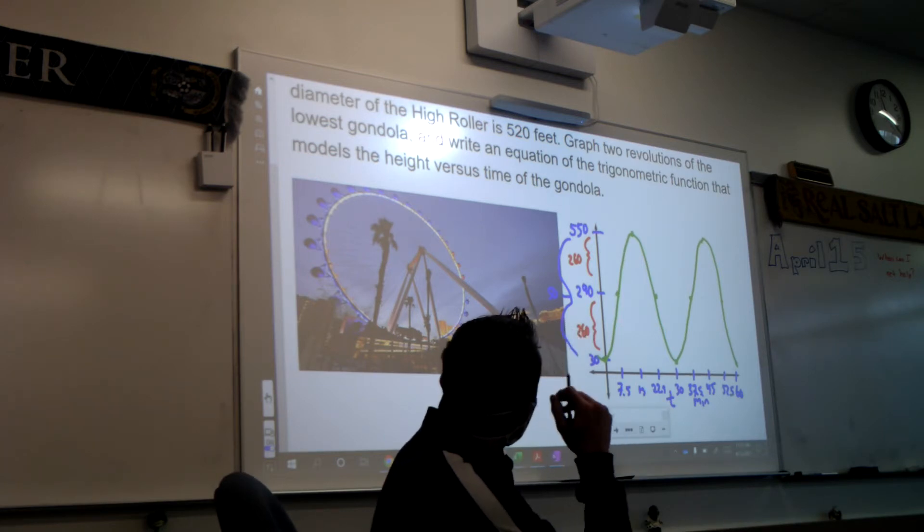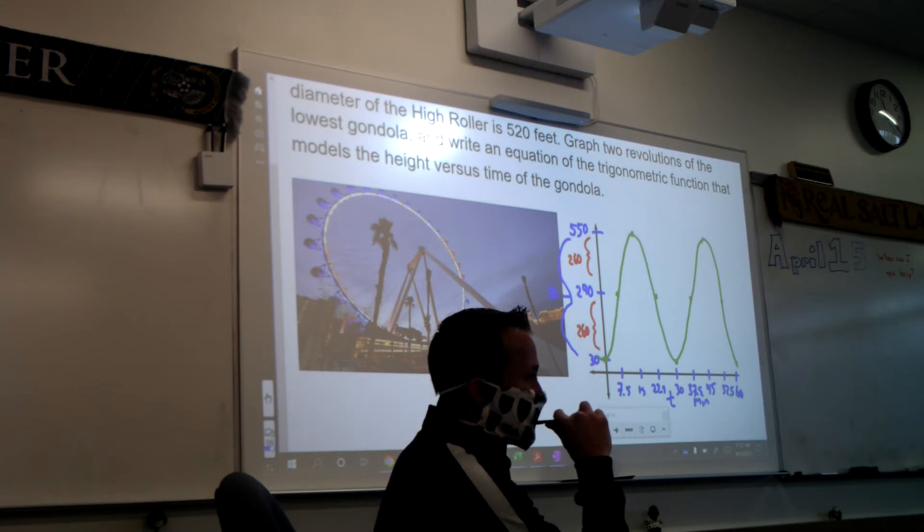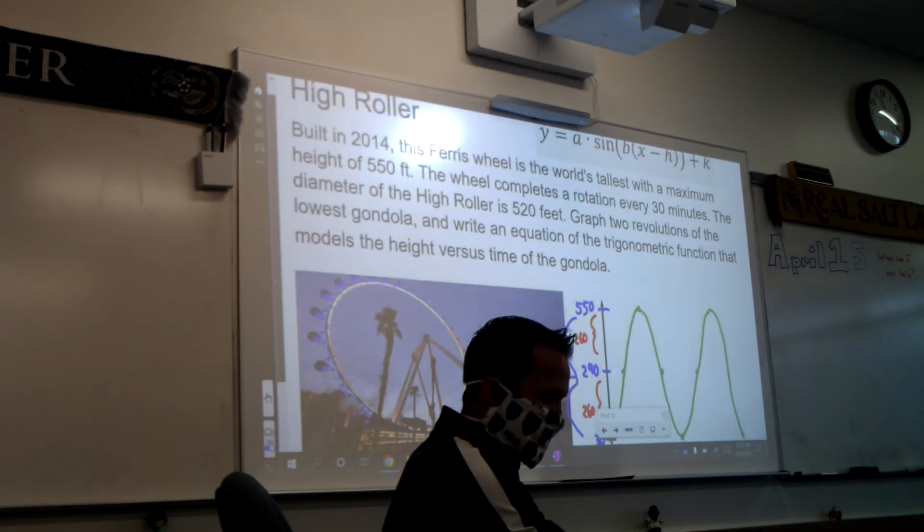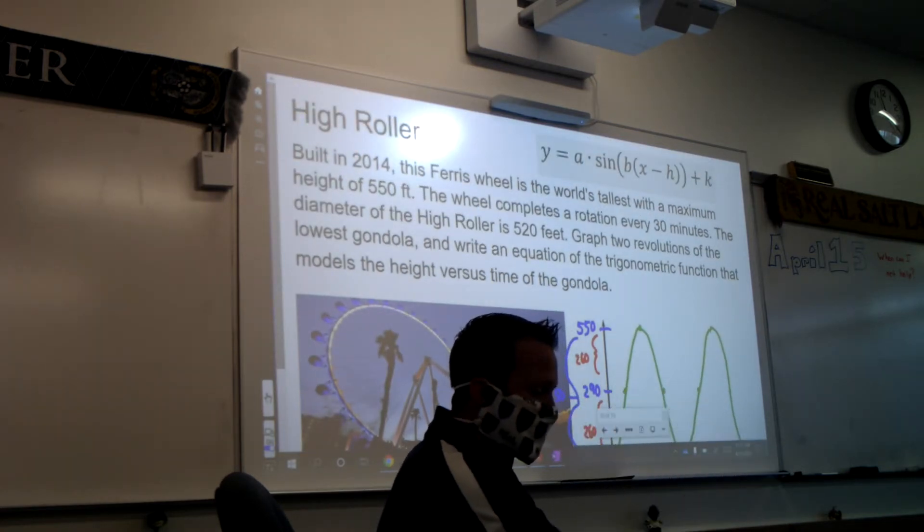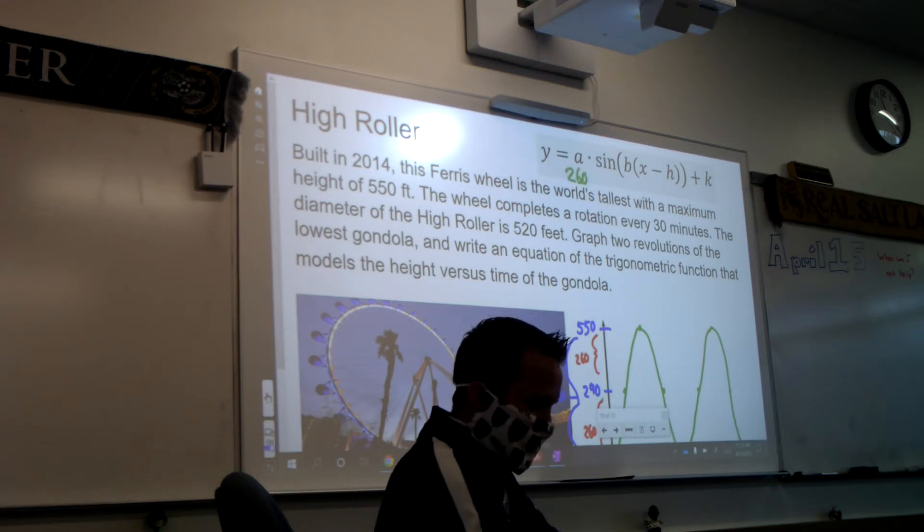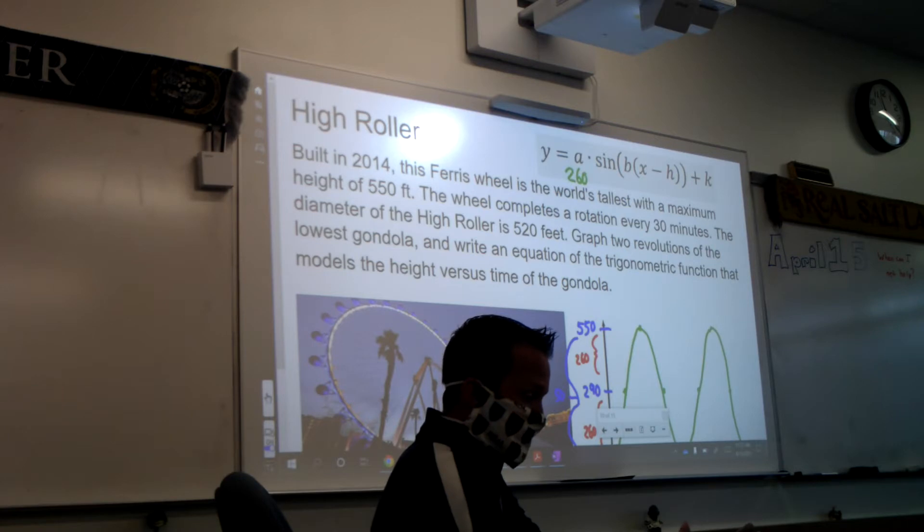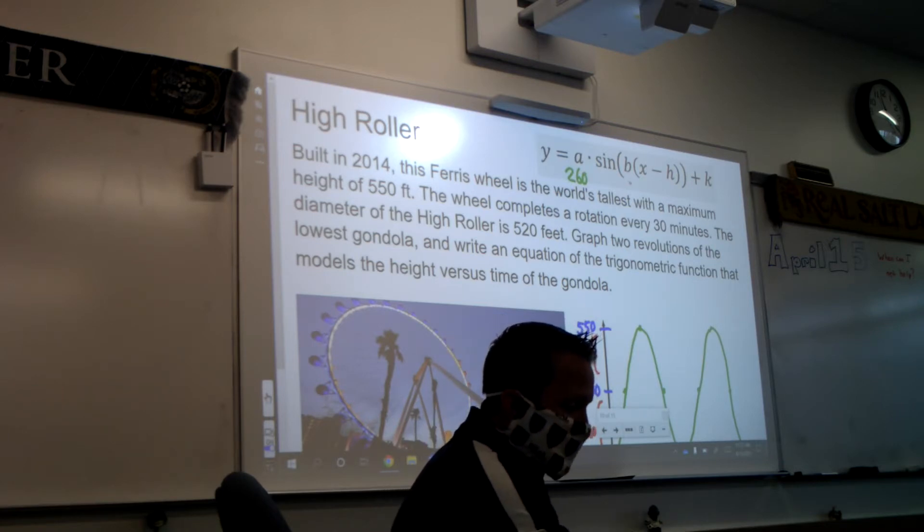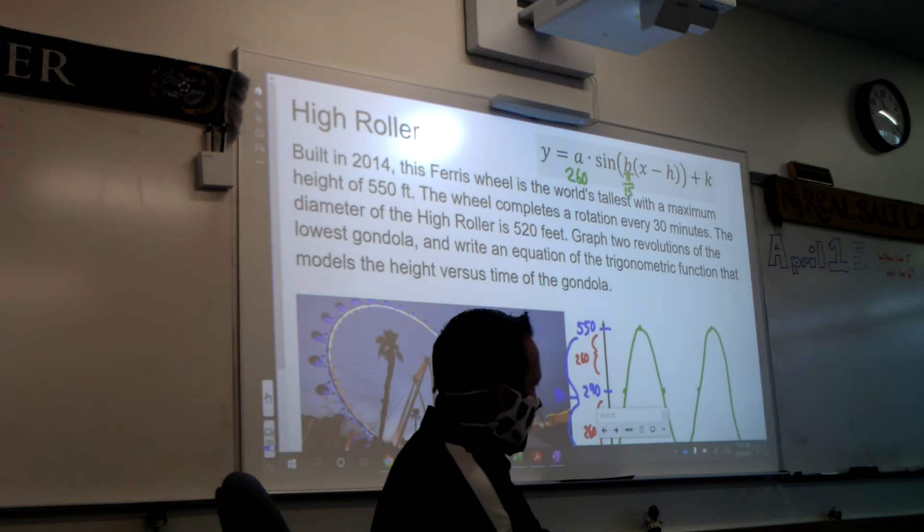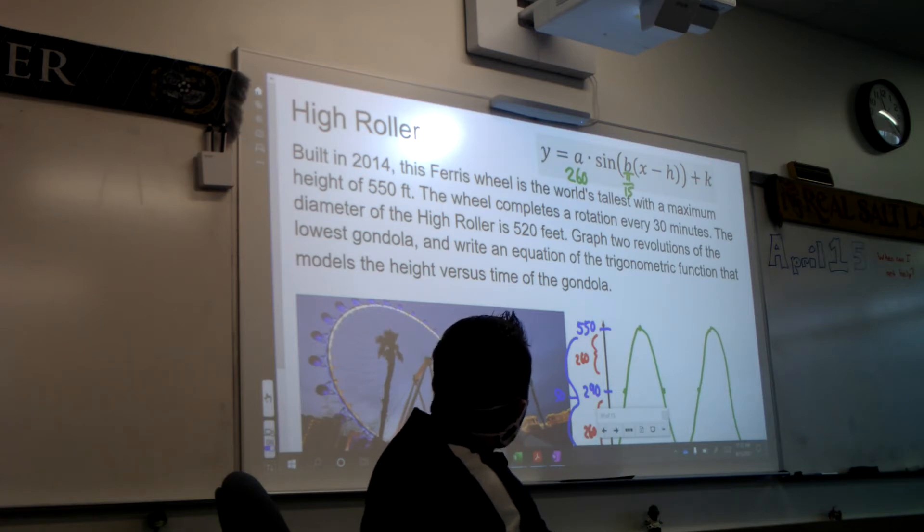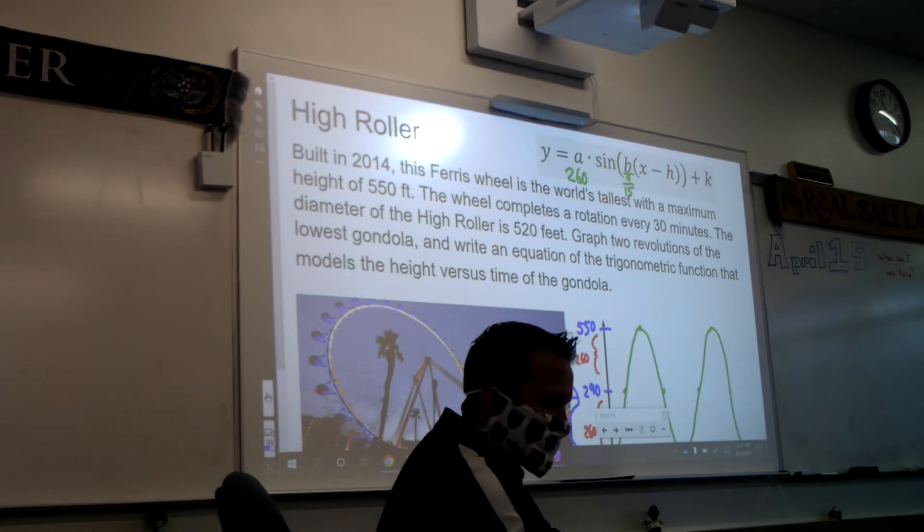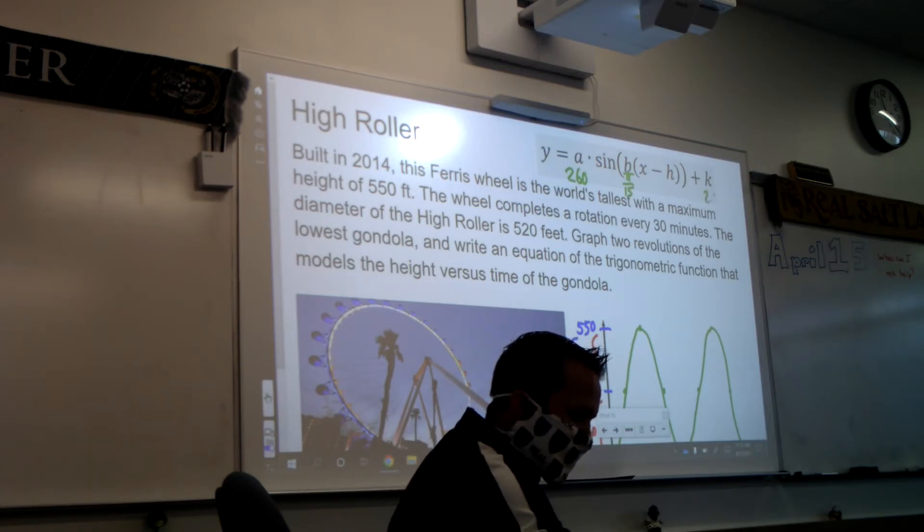Okay, before I do it, do you have any questions on how we graph that? If so, can you stop me. Let's plug the pieces together. What is A going to be? What is the amplitude? 260. That's how much it's going up or down from the midline. And another way to think about it, that's the radius. Because whatever the radius is, that's going to be the amplitude. What is B going to be? Pi over 15. That's not changing because our period is still 30, right? So that's what we saw in the London Eye. It's going to also be here for the high roller. What is our midline? 290.